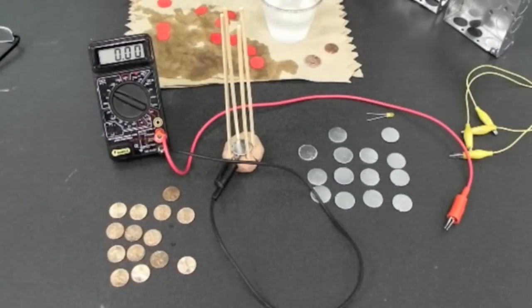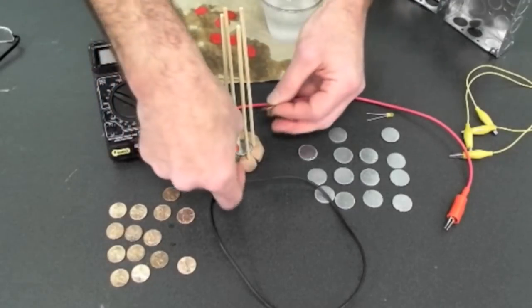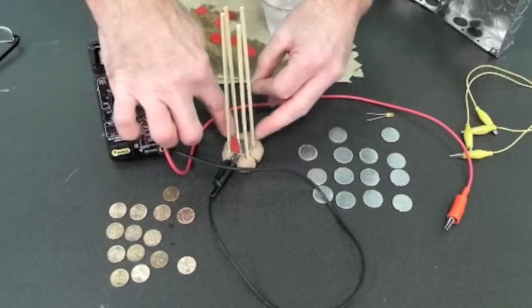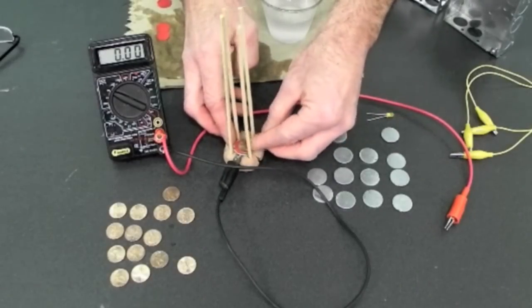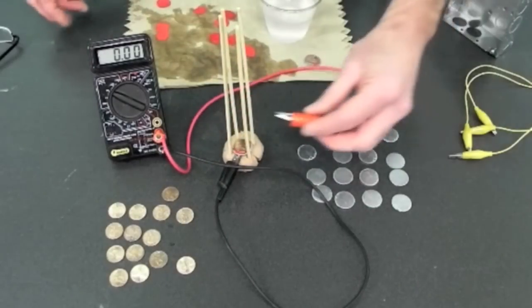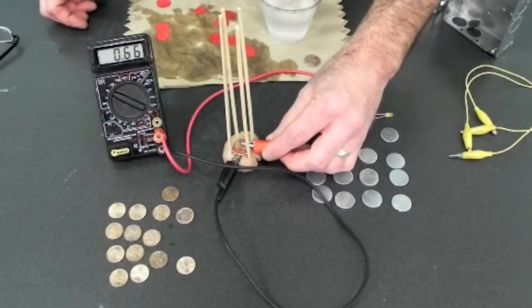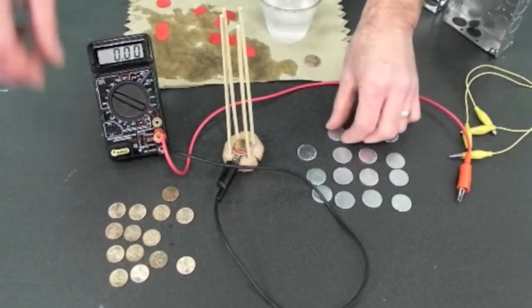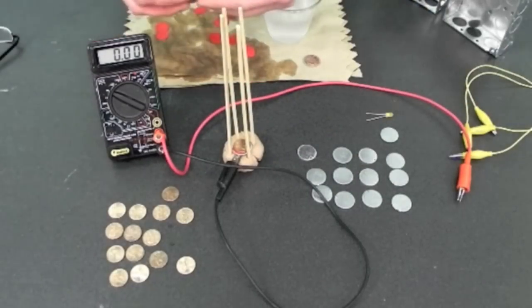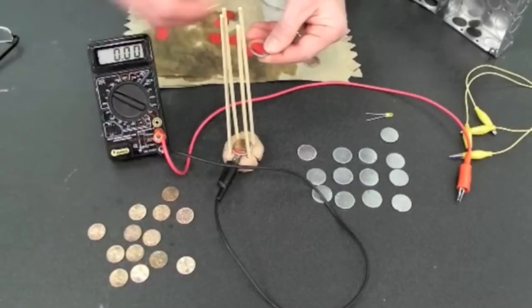All we have to do now is start making zinc cardstock copper electrochemical cells and begin stacking them on top of each other. So I place a piece of salt water soaked cardstock onto my zinc disc, a piece of copper on top of that, and I read a potential of 0.64 volts.